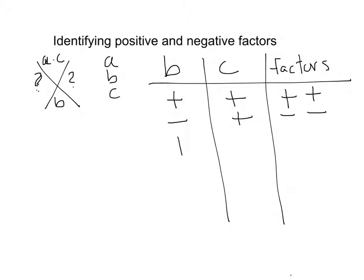If you have a positive b with a negative c, you have a positive and a negative factor. And if you have negative b with negative c, you have a positive and a negative factor. This will hopefully help you decide what your factors are as you build the problem. So let's do a few quick examples.